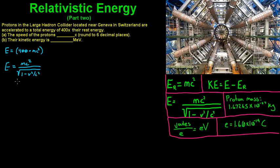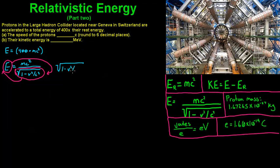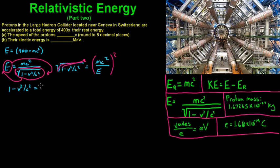For the first step, we take the square root term and move it up, and take E and move it down. That's going to leave us with the square root of 1 minus v²/c² equal to mc²/E. Now we need to square both sides — squaring the left side gets rid of the square root — and we're left with 1 minus v²/c² equal to mc² divided by E, all squared.